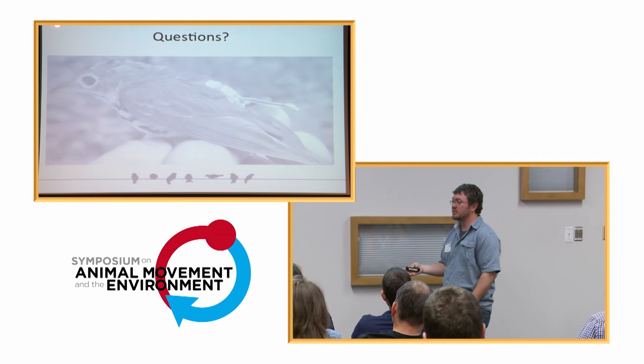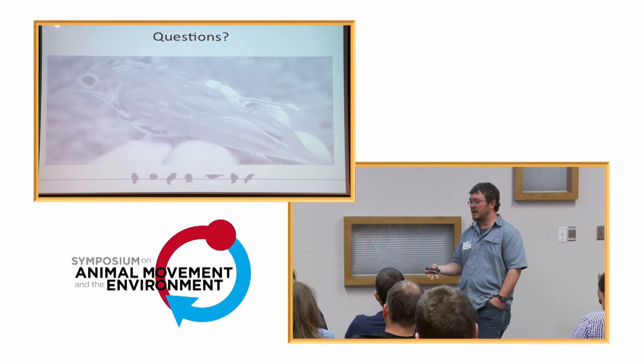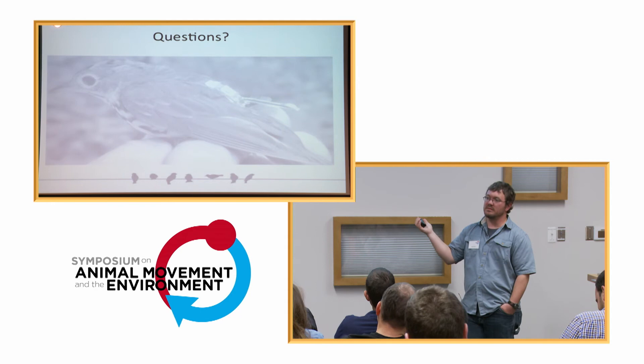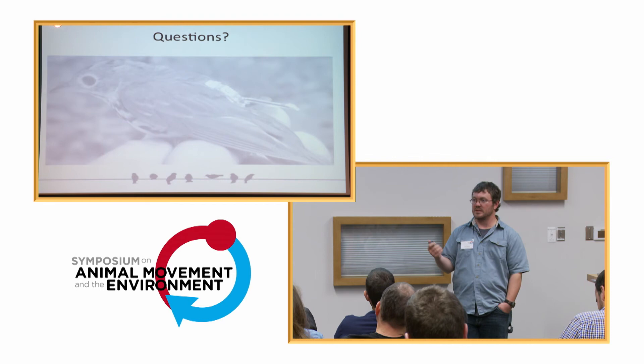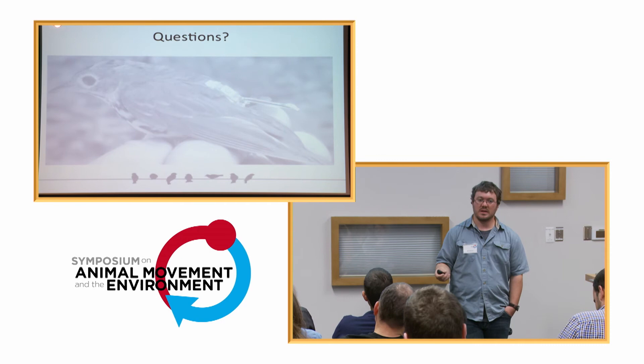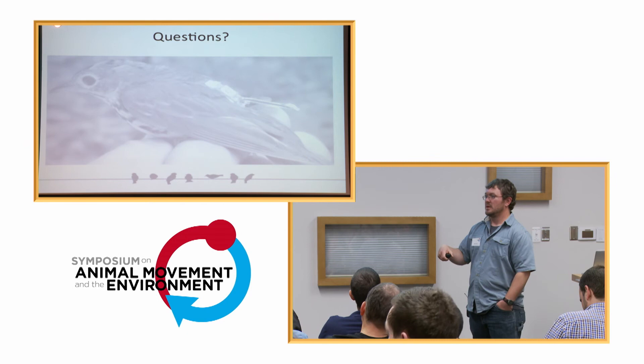Survival was higher even accounting for detection — I do think that's real. Oven birds are like dump trucks; they're always on the ground, except when migrating. This added weight likely doesn't have that much of an impact compared to, say, barn swallows, which have been shown to have negative effects from geolocators because they're always on the wing. These birds forage on the ground and can likely handle the weight better.